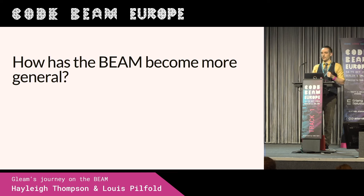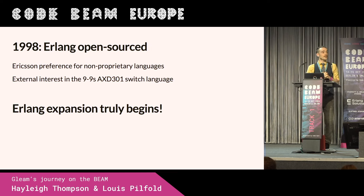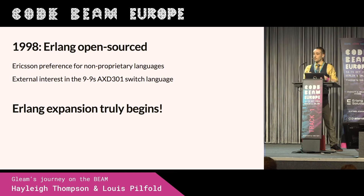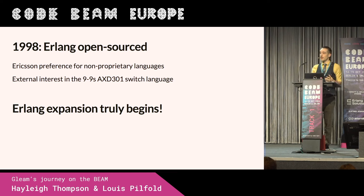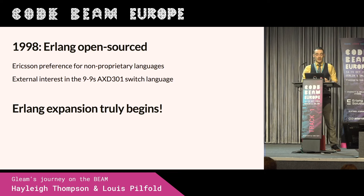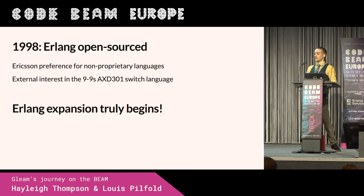You can look across the timeline and identify times when people did things that made the Beam world grow just a little bit bigger. The earliest one that was really impactful was back in 1998 when Erlang was open sourced. Erlang was a proprietary language — you could only really use it for things Ericsson wanted you to use it for. But now, if you had the know-how, you could take it and do anything you want. This happened partly because of a growing preference for non-proprietary languages within Ericsson, and people from the outside had heard about the amazing success with Erlang — what was this magical technology that could achieve nine nines of uptime? With this, the gate was opened and the ecosystem really exploded.